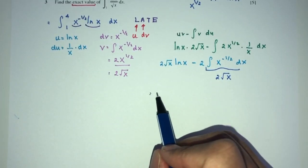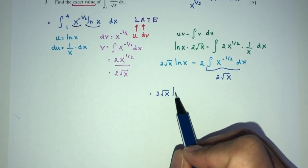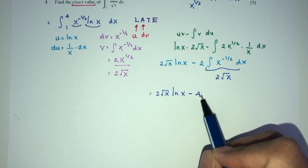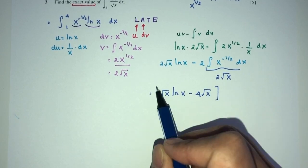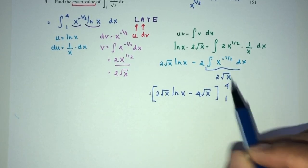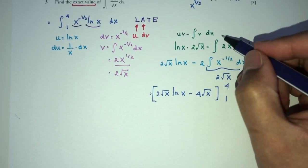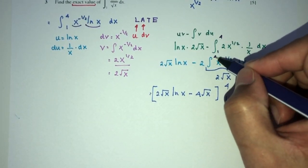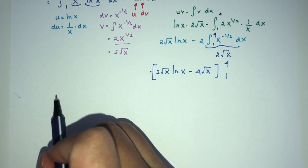So, eventually, you will have 2 root of x, ln of x minus 4 root of x. And your limits will be the value of 4 and 1. Of course, you have to write the limits everywhere here. 4 and 1, 4 and 1, and so on. Now, replace. Let's see what happens.